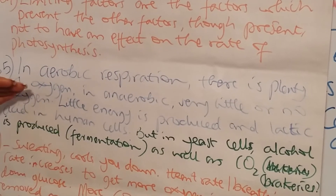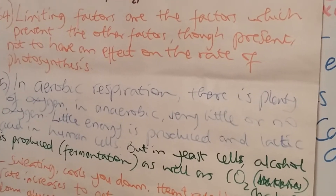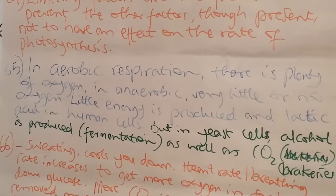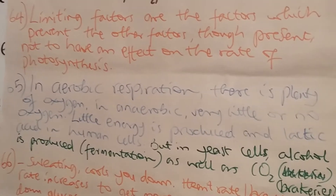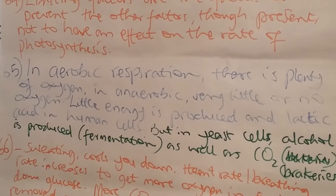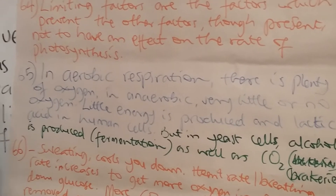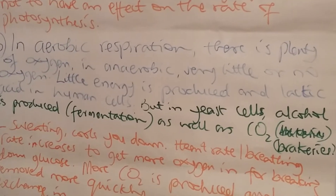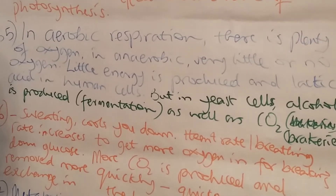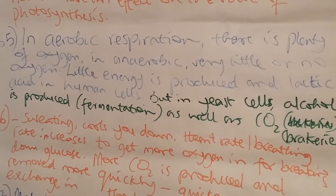Question 65 is about the difference between aerobic and anaerobic respiration. In aerobic respiration there is plenty of oxygen; in anaerobic respiration there is very little or no oxygen at all. Little energy is produced in anaerobic respiration in muscle cells, and lactic acid is also produced. When lactic acid builds up in the muscle it can cause cramp.